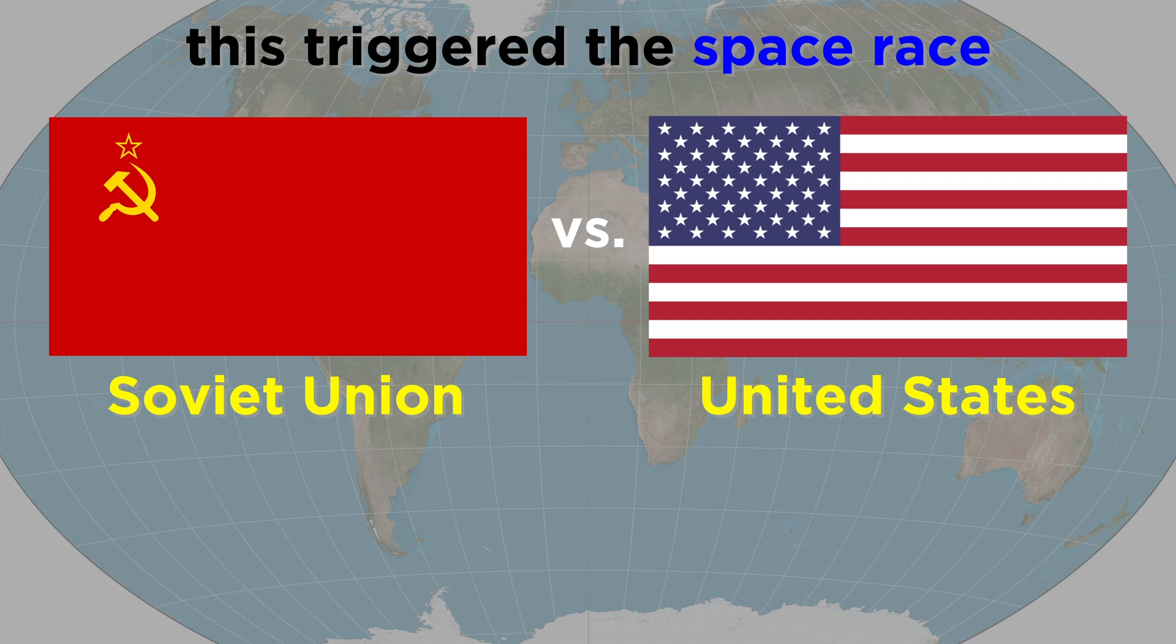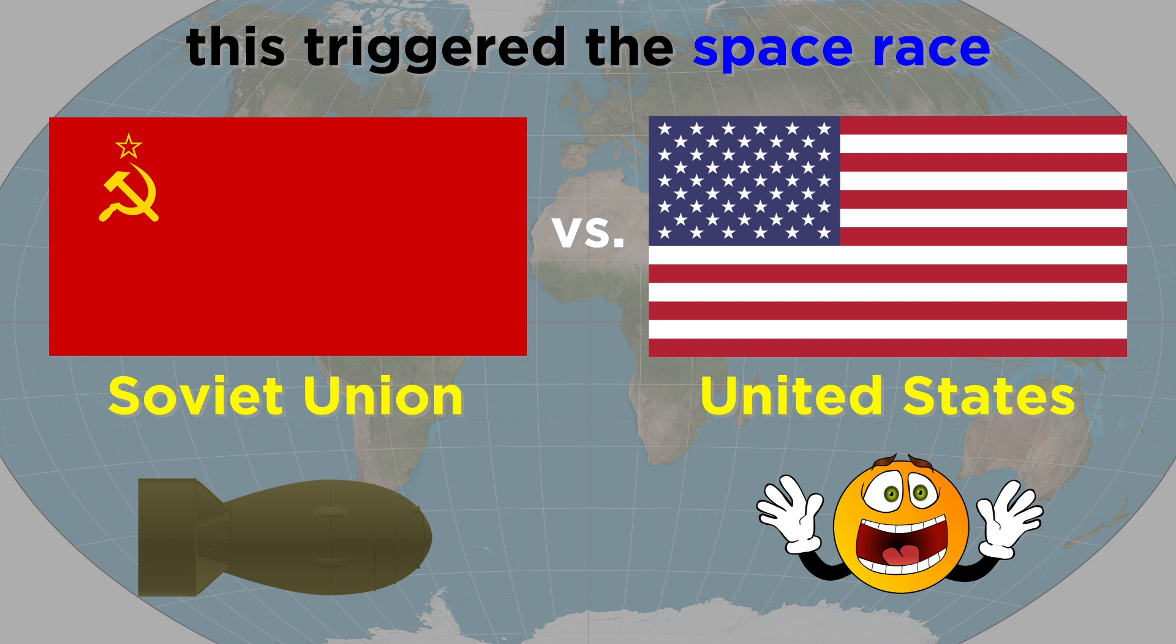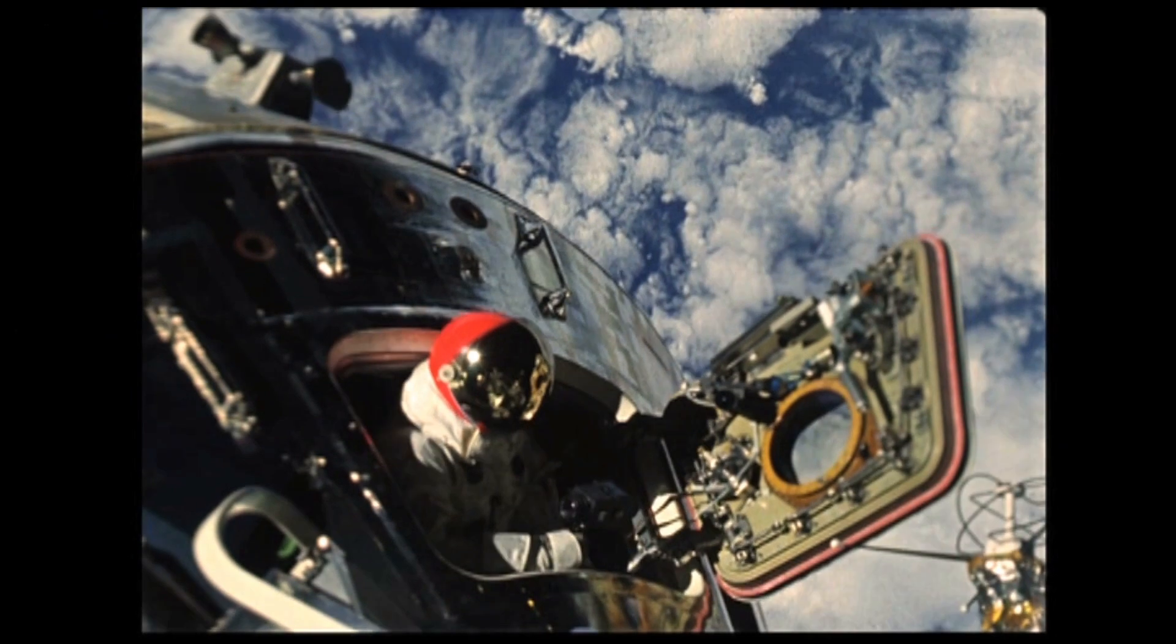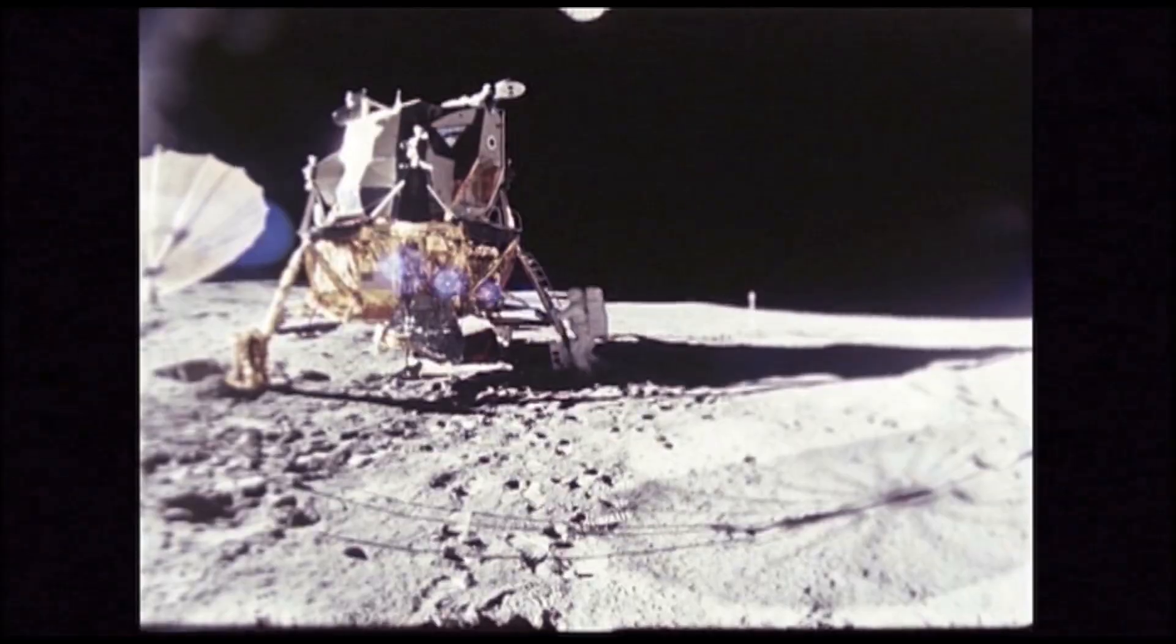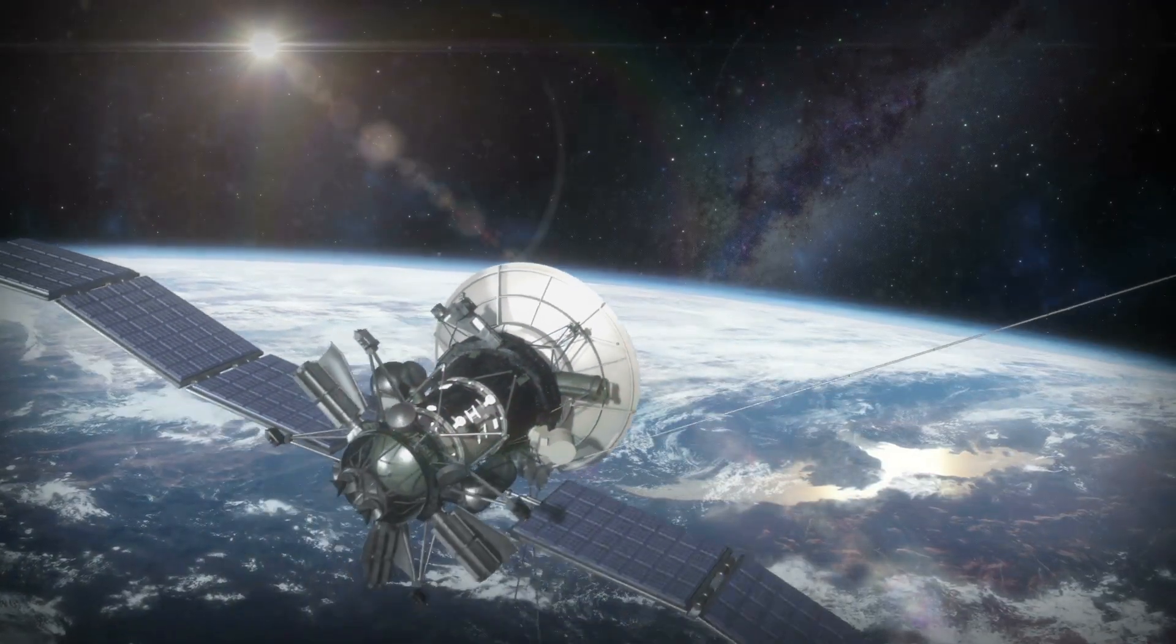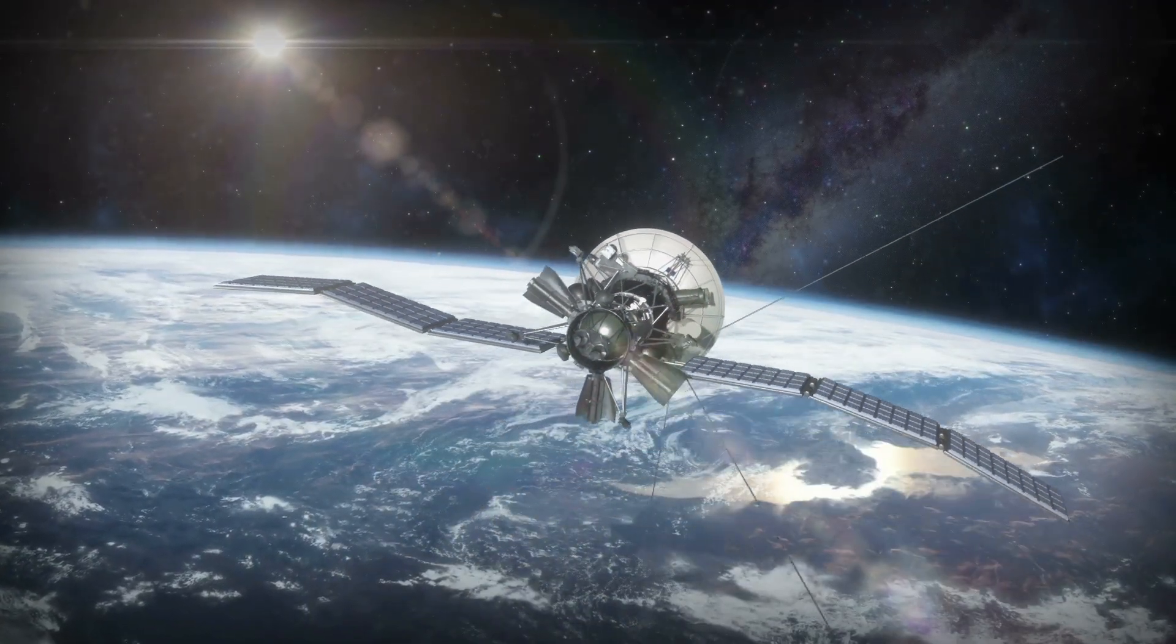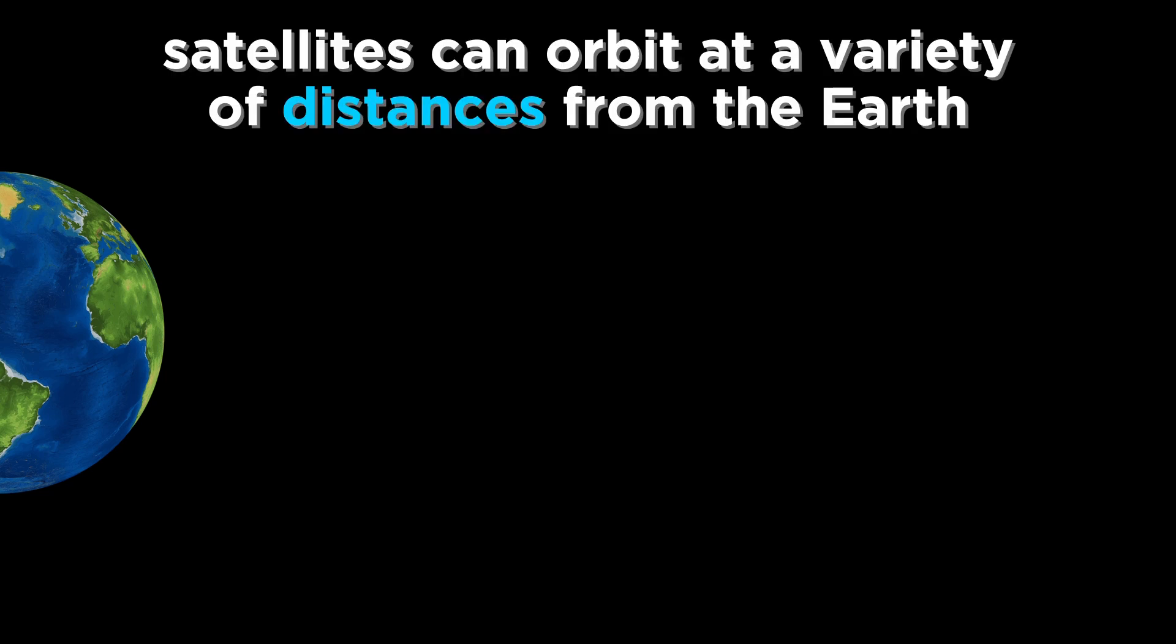This triggered the space race, which was part of the Cold War between Russia and the United States, based on a fear that Russia would put weapons in space to attack America. Born out of this fear was a frenzy of aeronautical innovation, which led to the moon landing and thousands of satellites, both for spying and for doing science. So how far away are these things?